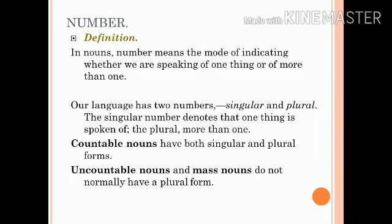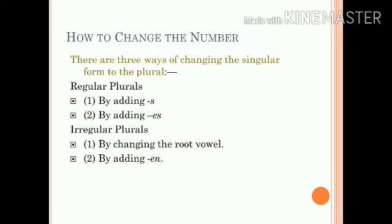We have countable nouns. The countable nouns have both singular and plural forms. But uncountable nouns and mass nouns do not normally have a plural form. Now let us see how plurals are formed.